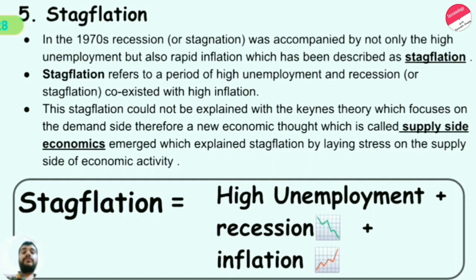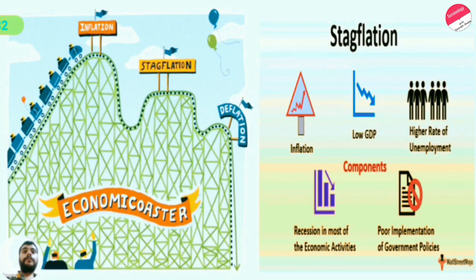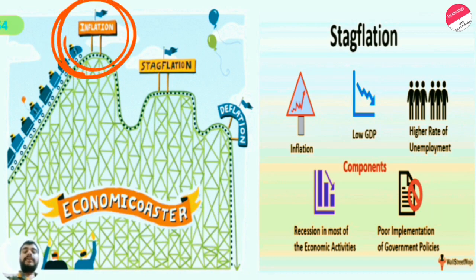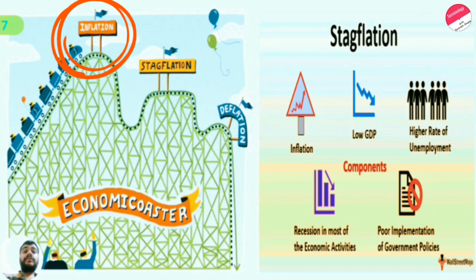Now, there are two pictures shown. The left picture tells us the basic understanding of stagflation. In inflation, you can see the tracks of the rollercoaster going in an increasing direction. You can assume the rollercoaster as representing GDP growth — so in inflation, GDP growth may rise. That is why we say that sometimes inflation is better for economic development.